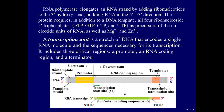A transcription unit includes 3 critical regions: a promoter, an RNA-coding region, and a terminator. In this picture we can find the structure of a gene. The promoter determines the transcription start site, indicated by +1 nucleotide. To the right are downstream nucleotides; to the left, upstream nucleotides. Transcription starts at the promoter and stops at the terminator. Before the protein coding sequence we can find a 5' untranslated region, and after the stop codon a 3' untranslated region.